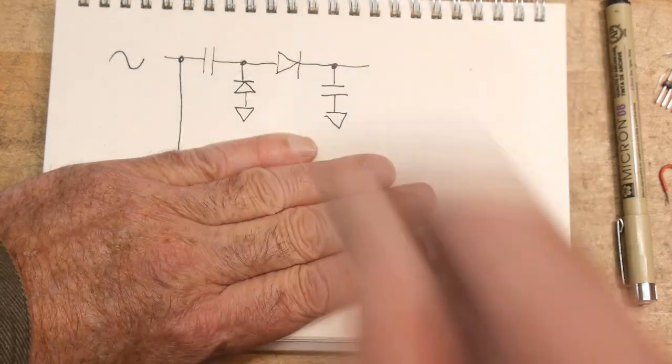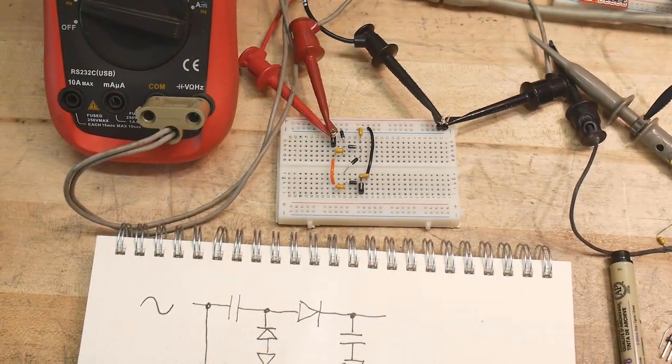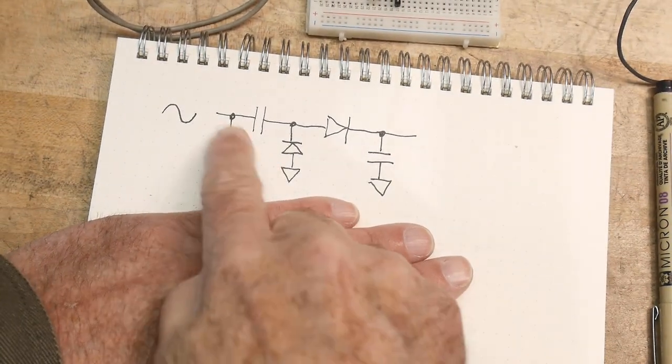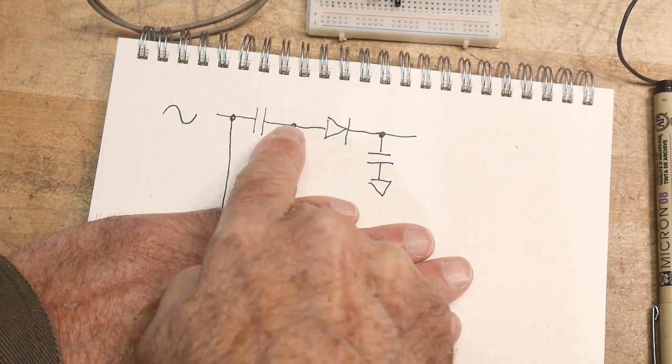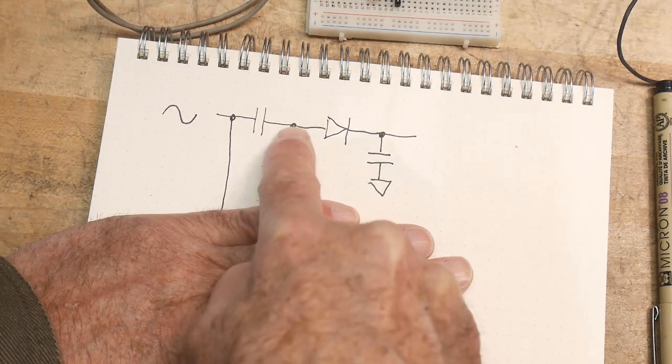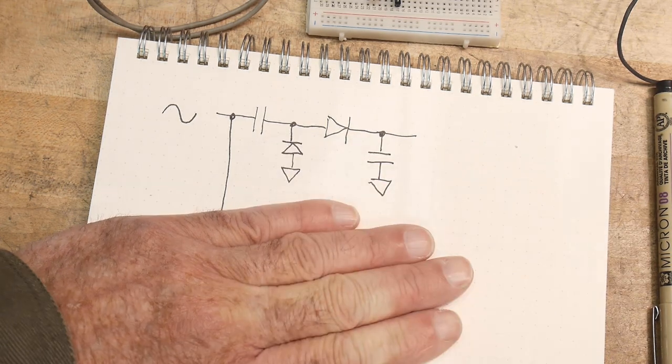So let's go ahead, and I've actually built up this little circuit right here, and so let's go ahead and measure some points. We're going to measure the incoming, we're going to measure here, and we're going to measure here. So these three points: incoming, the clamp voltage, and then the output voltage.